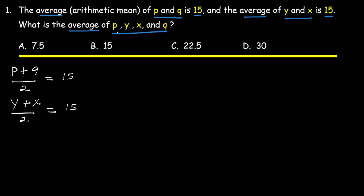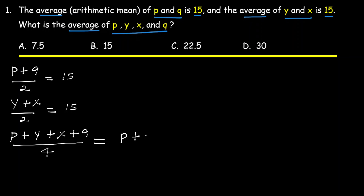Given that, we want to find the average of P, Y, X, and Q. To calculate that average, we compute (P + Y + X + Q) divided by 4. Using the commutative property of addition, this equals (P + Q + Y + X) divided by 4.